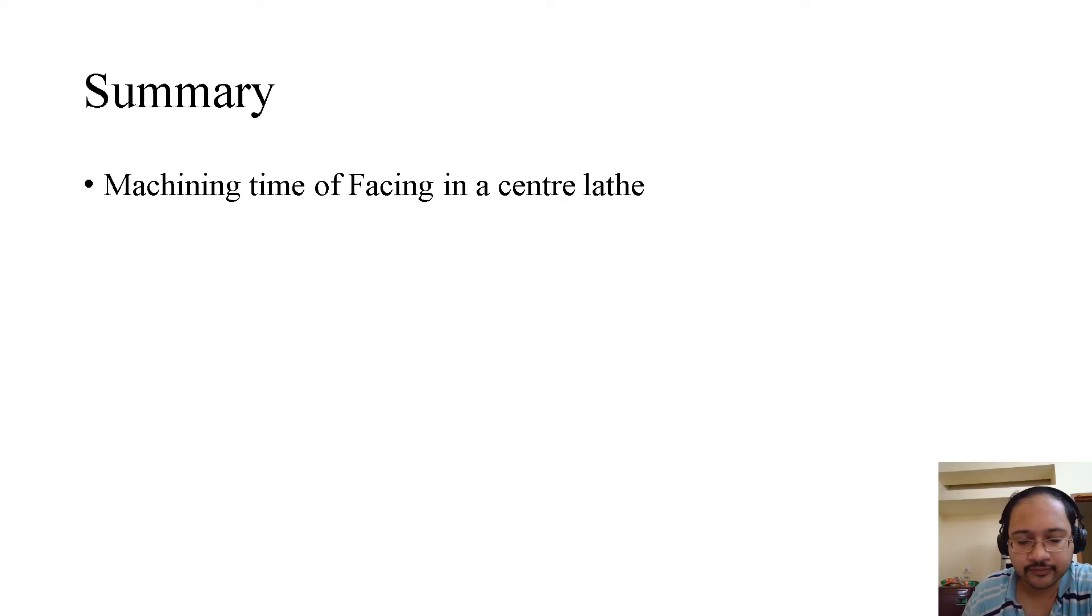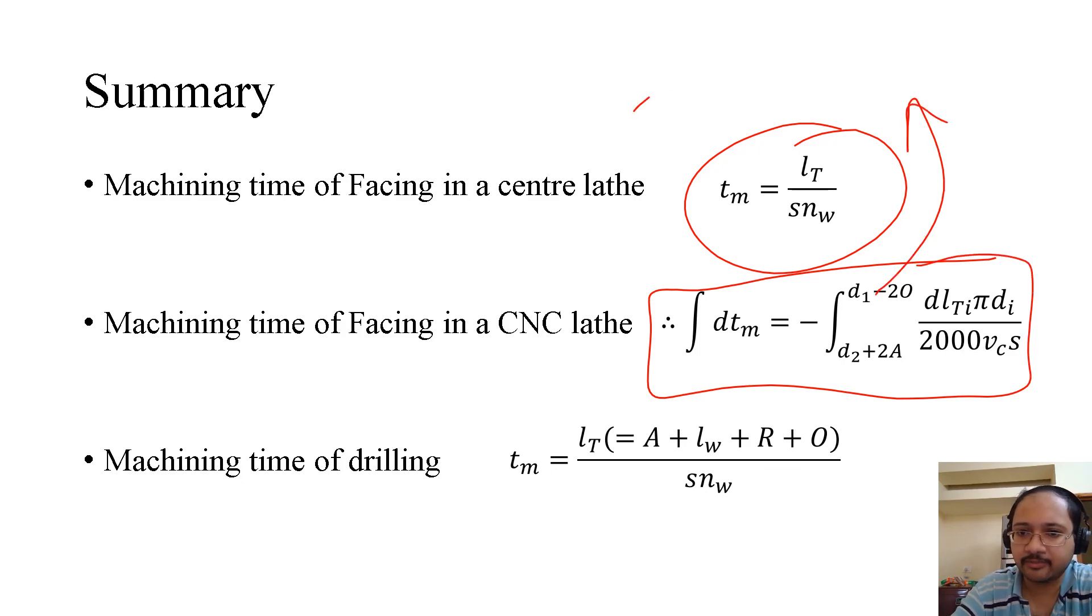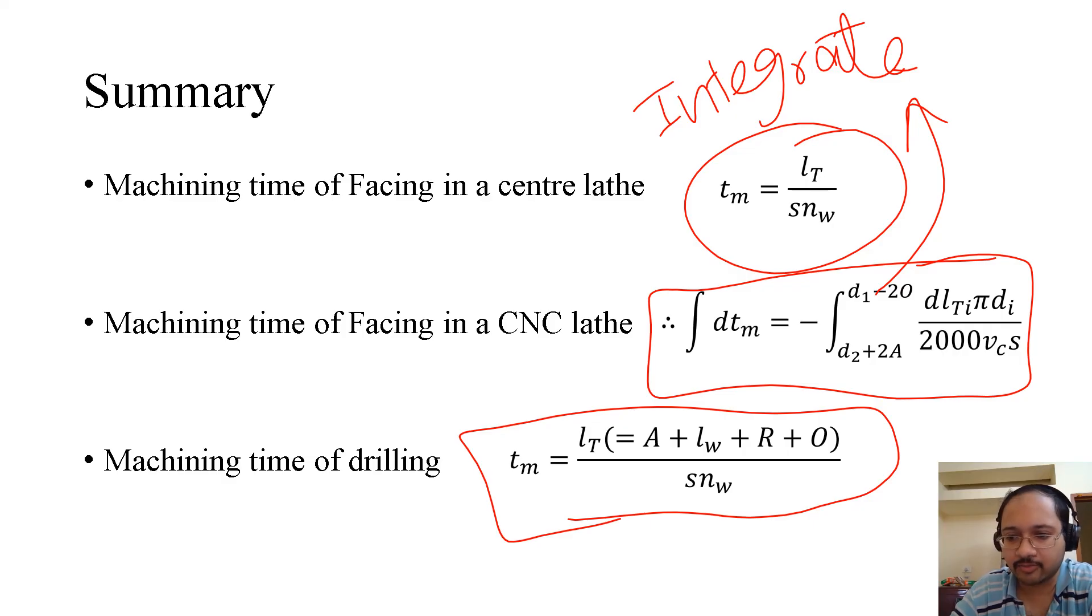To summarize, we have discussed machining time of facing in a center lathe, machining time of facing in a CNC lathe, and machining time of drilling. Tm equals Lt by SNW for facing in a center lathe. In a CNC lathe, we have to integrate, and that is very important. For drilling, we have this expression to find out the machining time in drilling operation.